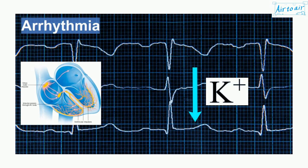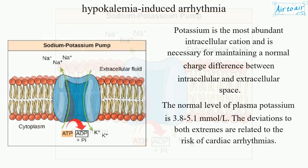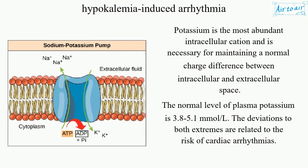Hypokalemia-induced arrhythmia — a life-threatening arrhythmia caused by hypokalemia. Potassium is the most abundant intracellular cation and is necessary for maintaining a normal charge difference between intracellular and extracellular space. The normal level of plasma potassium is 3.8 to 5.1 mmol/L. Deviations to both extremes are related to the risk of cardiac arrhythmias.